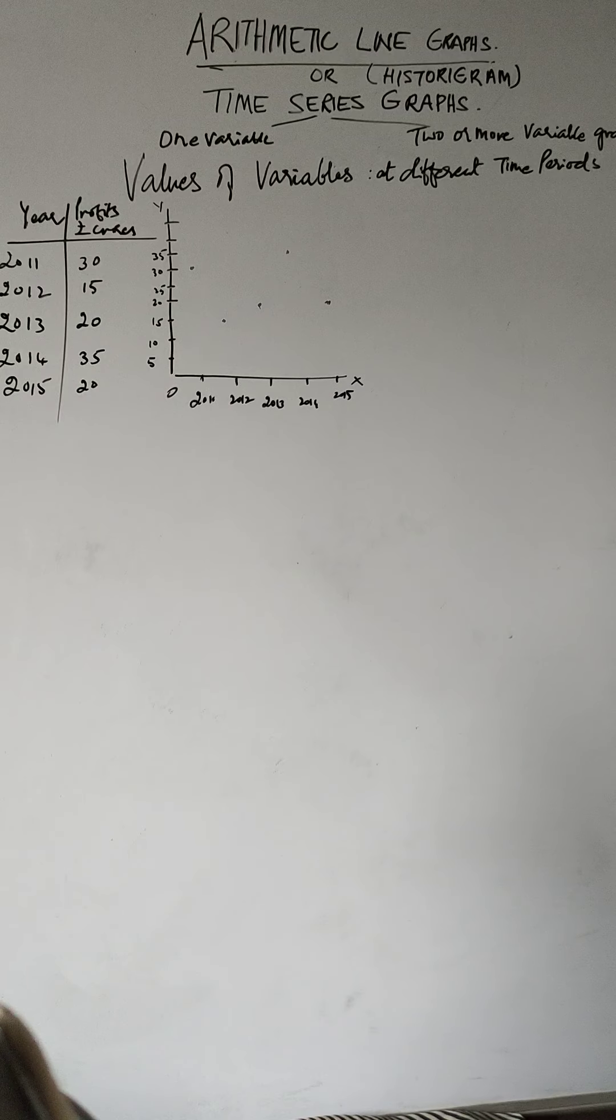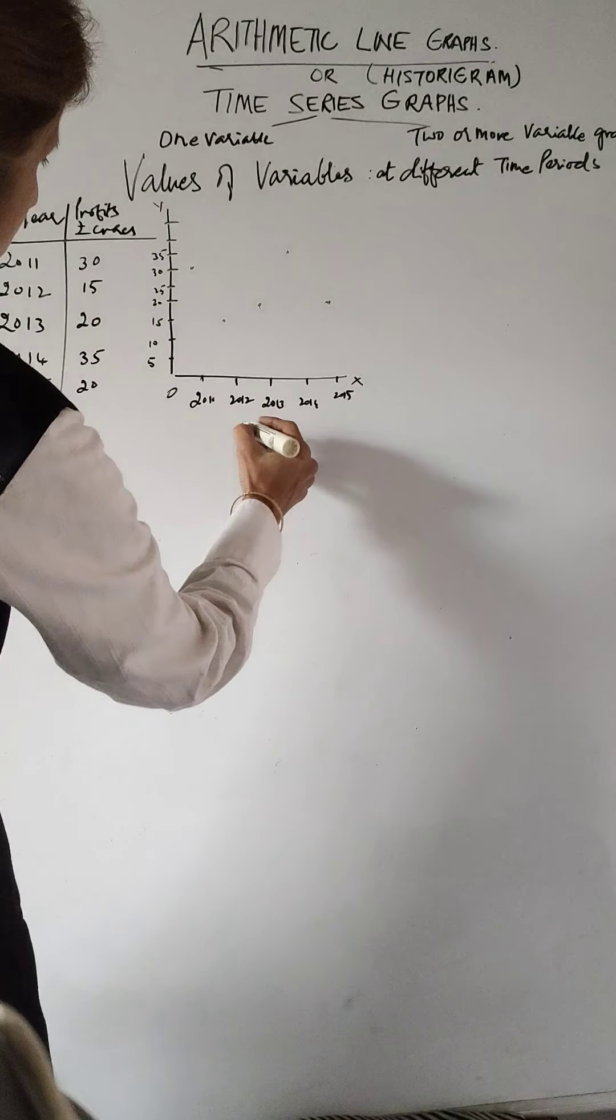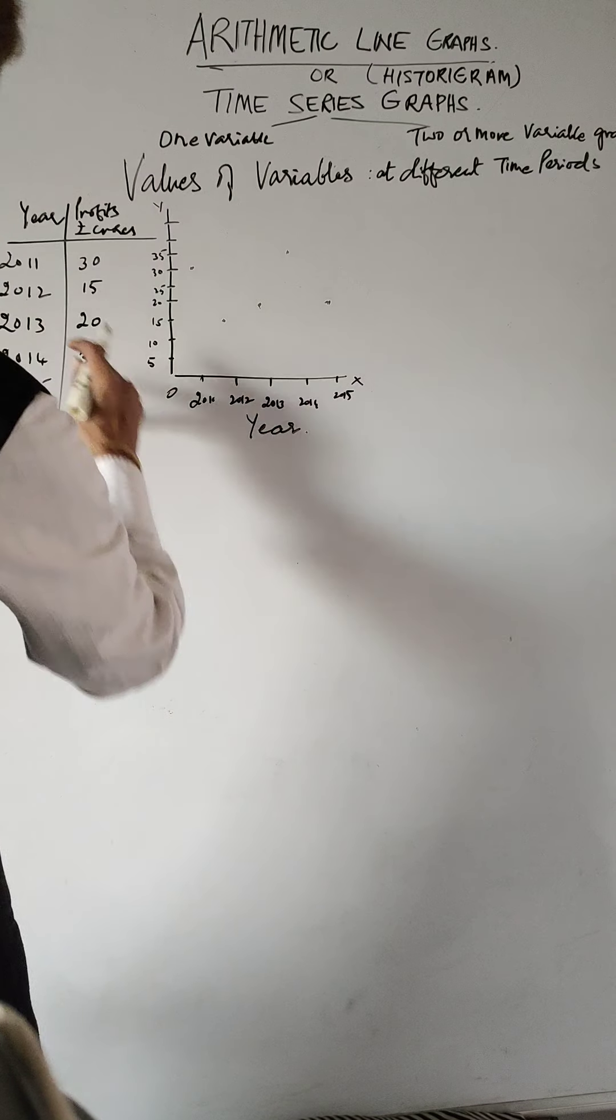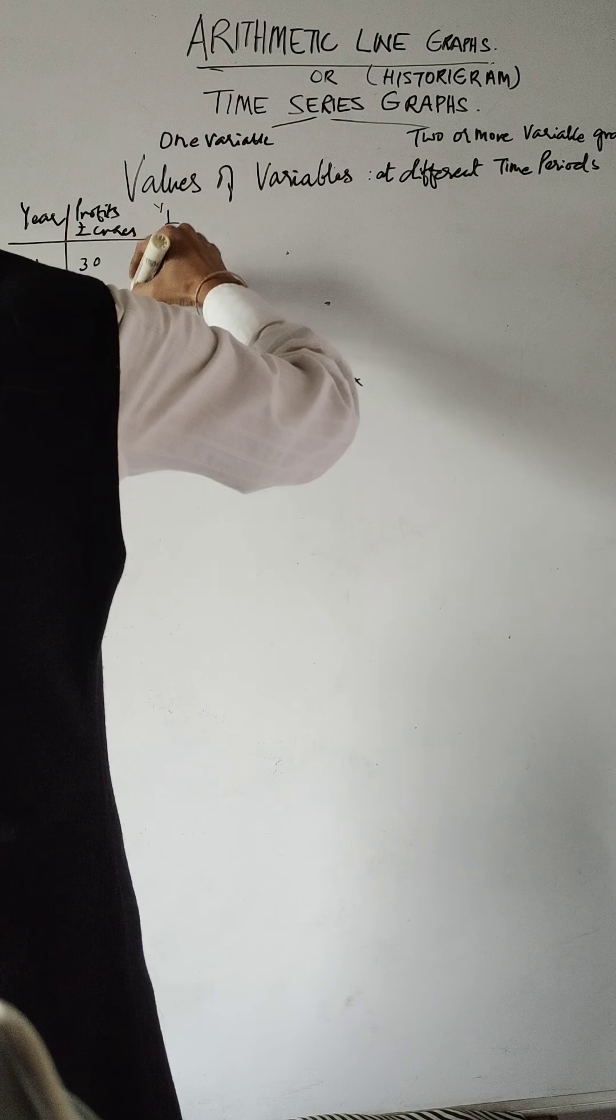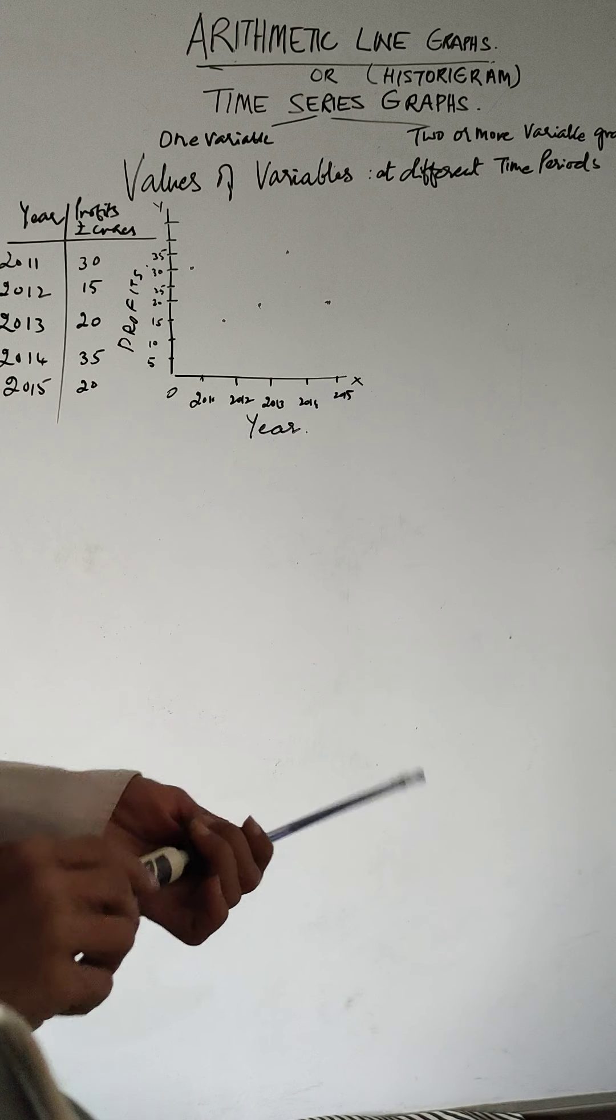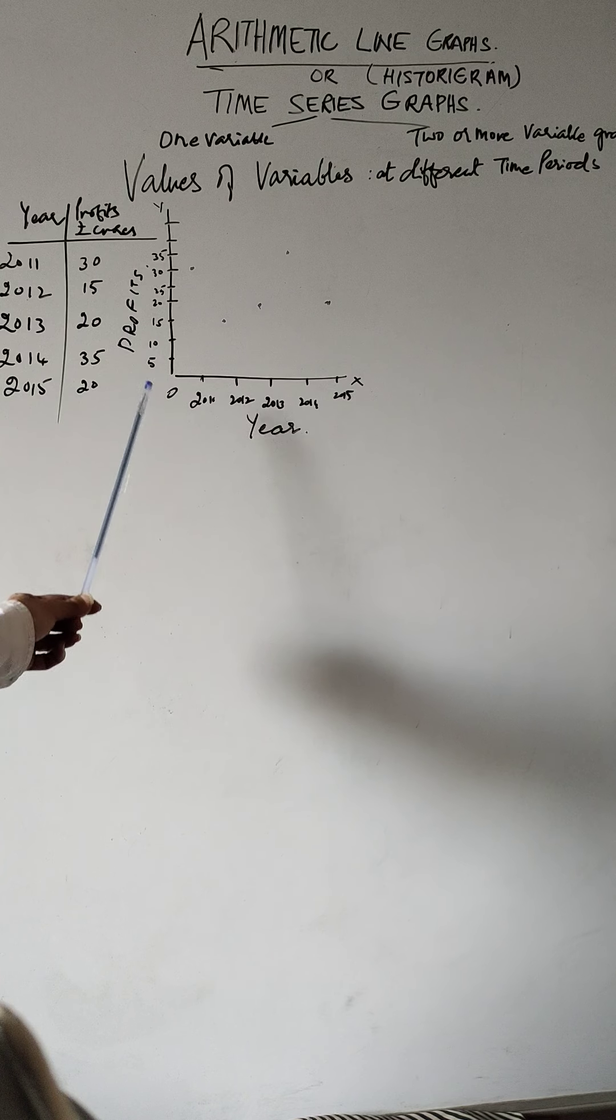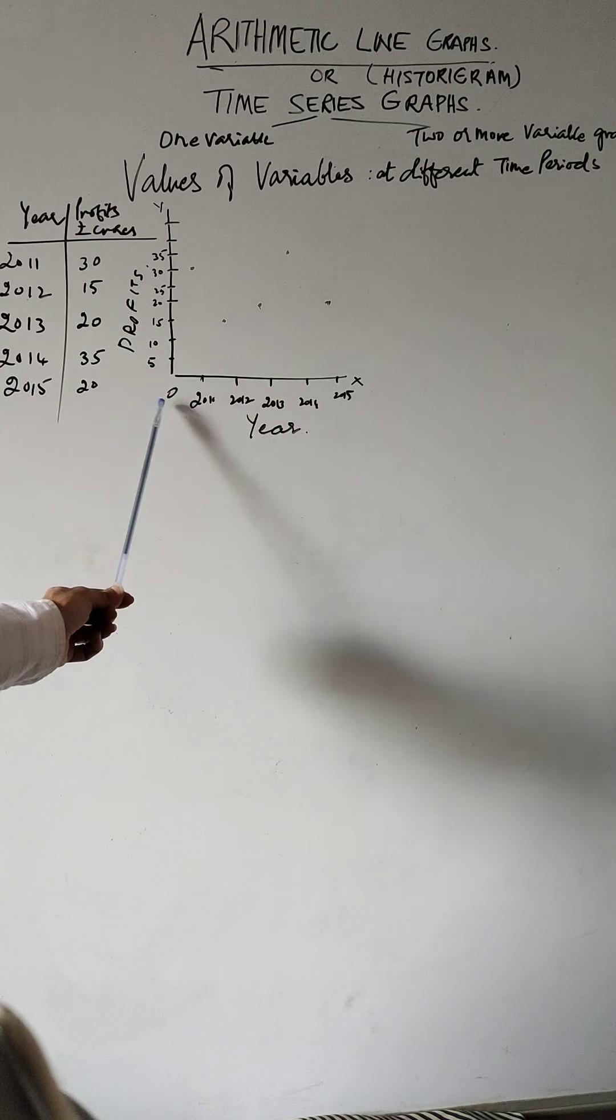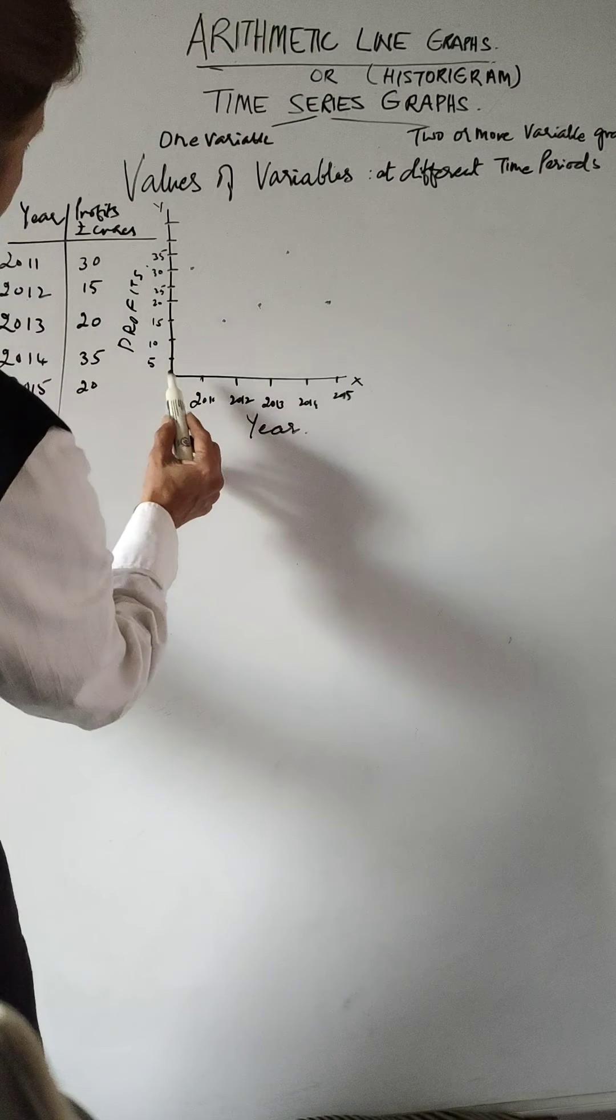You must mark the x-axis right here, and here it's going to be profits. If you don't write that, at least when we are correcting or marking your paper, we deduct marks for this also because the variable has to be specified. What is there on the x-axis and what is there on the y-axis has to be given.